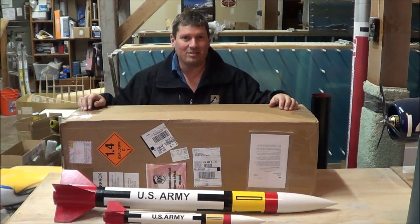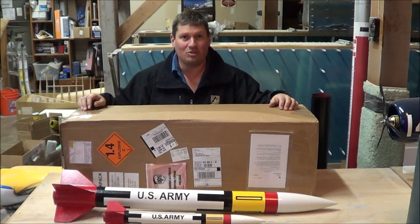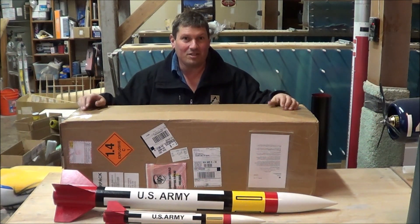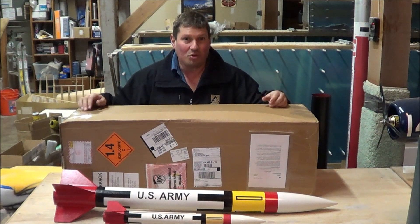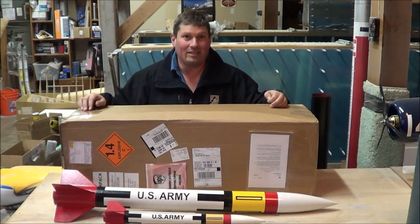The first rocket, the smaller one there, is the old Estes Patriot missile rocket. 1.6 inch diameter, and it flies on A through C motors. This was one of my favorite rockets when I was growing up. I think I built it sometime in the early 1990s.